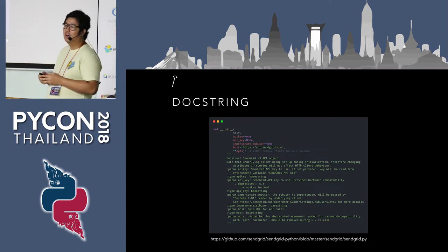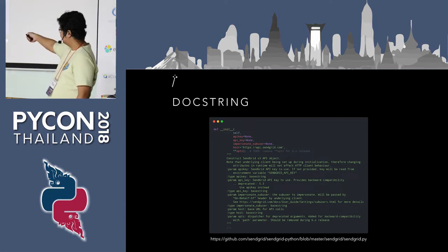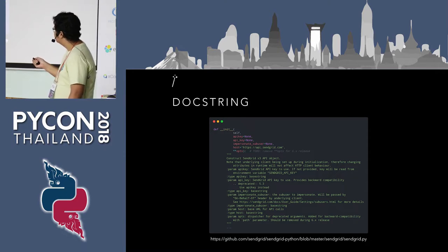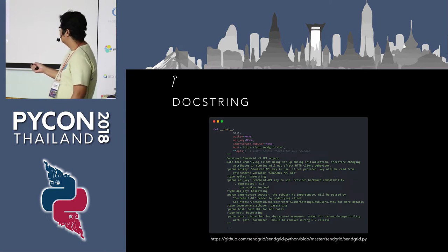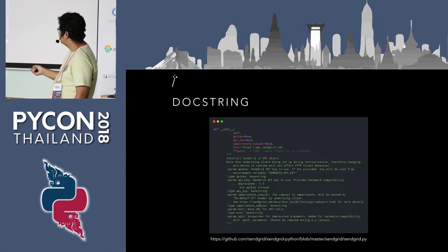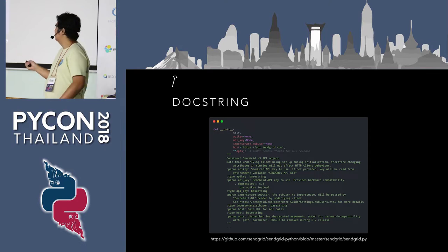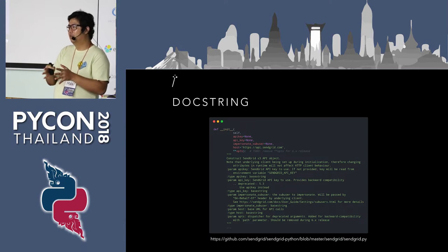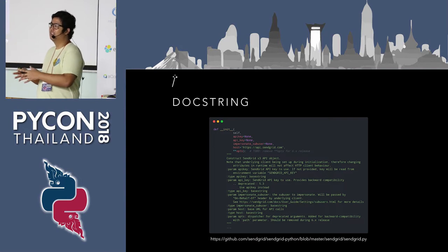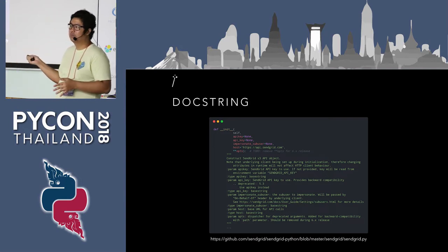For type annotations, this concept is not new. Most other languages have done this for a long time. But what most Python developers were doing before is using docstrings. As you can see from this code snippet from the Python API, there's a method with arguments like API keys and impersonate sub-user, and the docstring states the type — for example, API key is a base string. However, docstrings are problematic because they're not tied to the actual code. When you change the function signature, you might miss updating the docstring, making it obsolete.